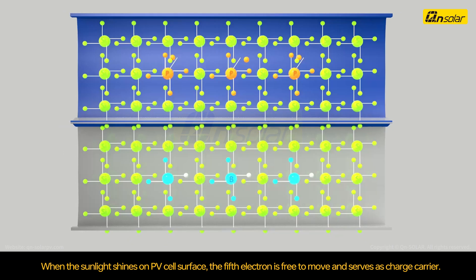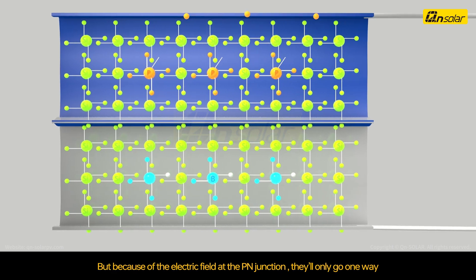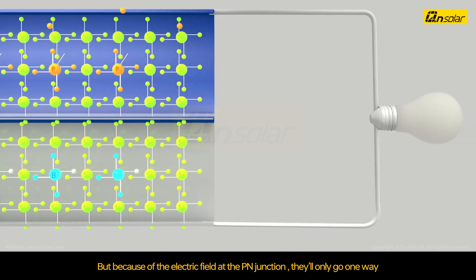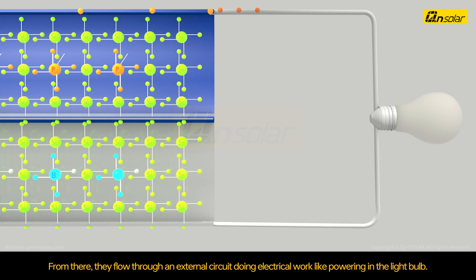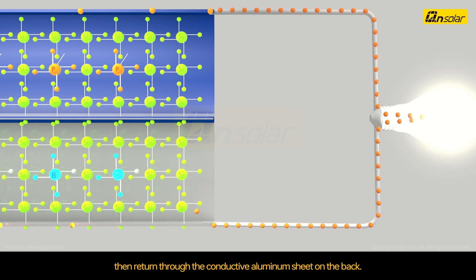When sunlight shines on a PV cell surface, the fifth electron is free to move and serves as a charge carrier. But because of the electric field at the p-n junction, they will only go one way. Those moving electrons are collected by metal fingers at the top of the cell. From there, they flow through an external circuit doing electric work, like powering a light bulb, then return through the conductive aluminum sheet on the back.